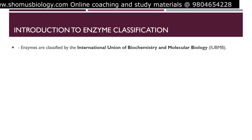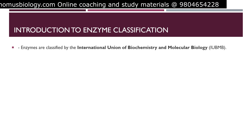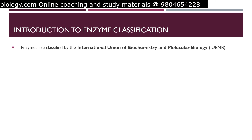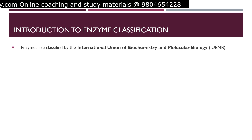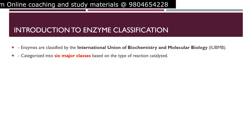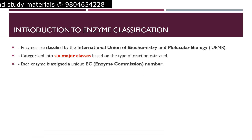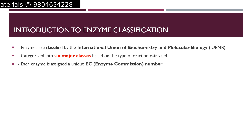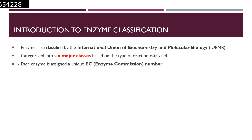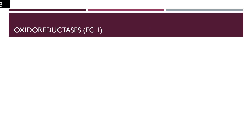Enzymes are classified by the International Union of Biochemistry and Molecular Biology — in short, IUBMB. They are categorized into six major classes based on the type of reaction that they catalyze. Each enzyme is assigned a unique EC — that is, Enzyme Commission — number. Some of these classes are divided into subclasses which have their own sub EC numbers.